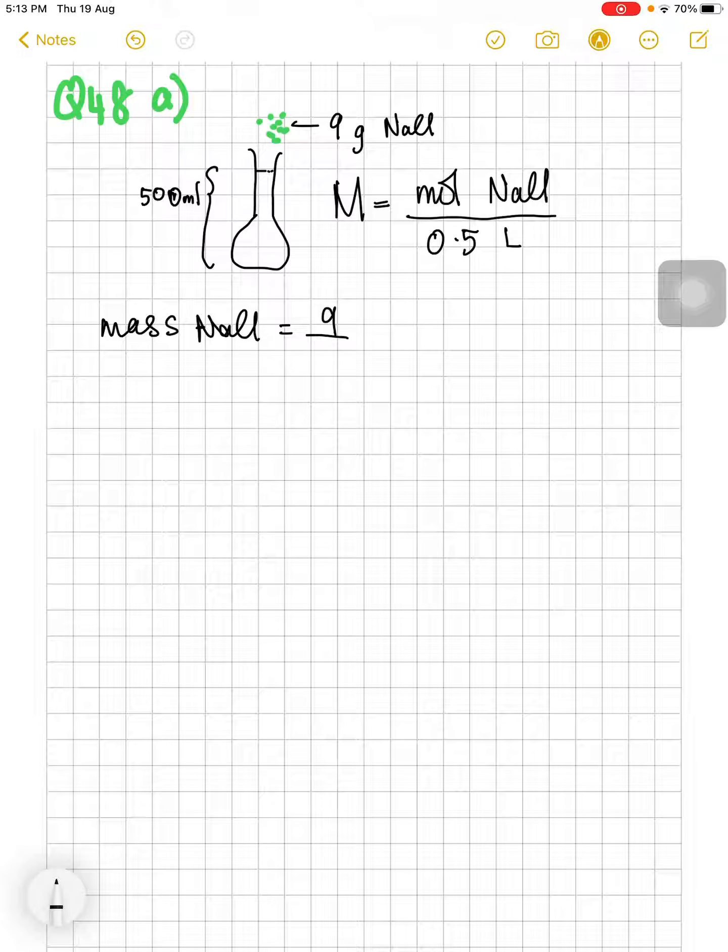9 grams divided by the molar mass. Molar mass of sodium is 23 plus chlorine 35.5, so it will be 58.5 grams per mol.